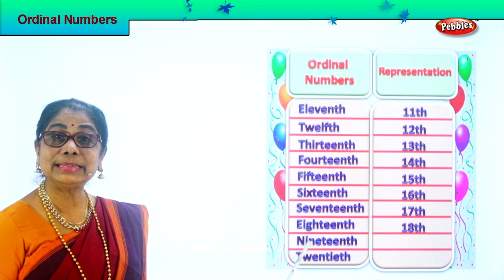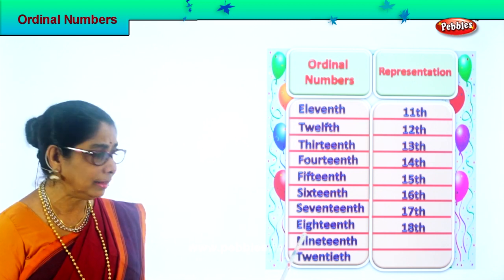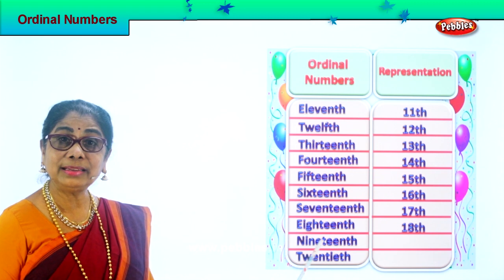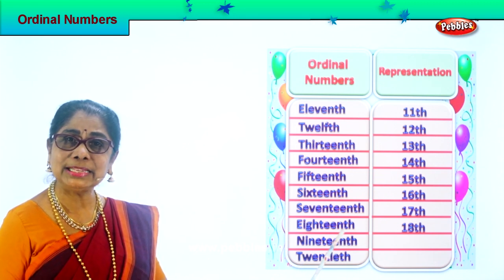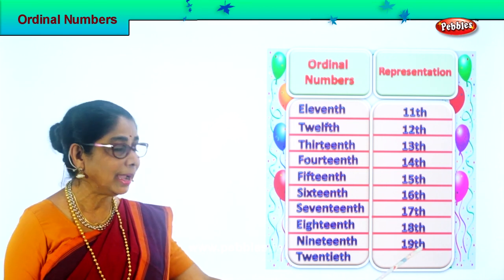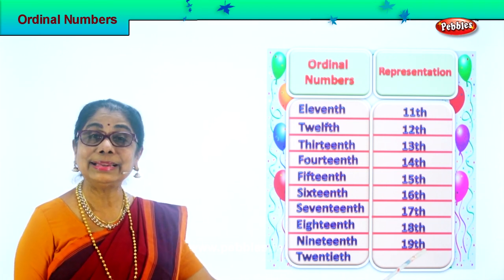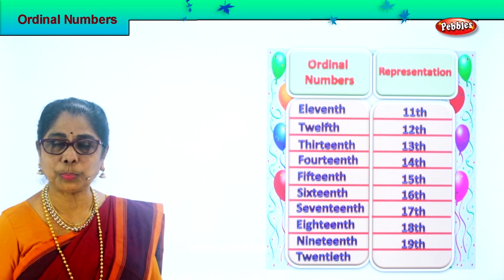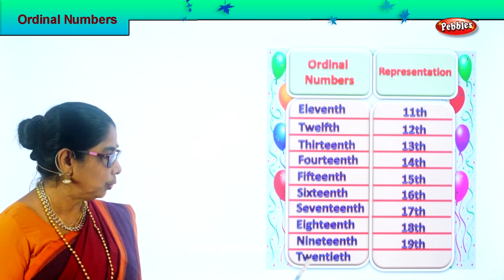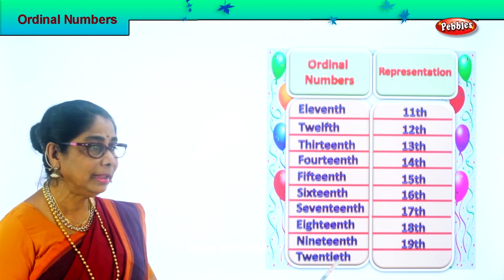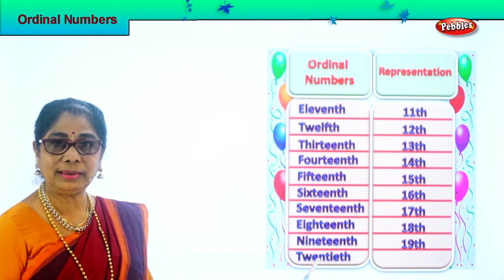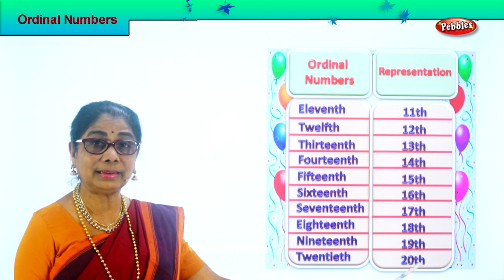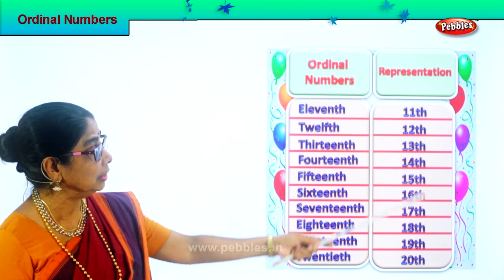And then this is 19th. Spell nineteenth: N-I-N-E-T-E-E-N-T-H. 19th. How do you represent 19th? Number 19 and put TH at the side: 19th. And finally we have 20th. Spell twentieth: T-W-E-N-T-I-E-T-H. 20th. How do you represent? Write 20 and then write TH at the side: 20th.